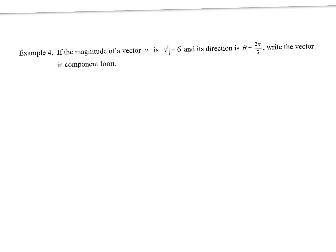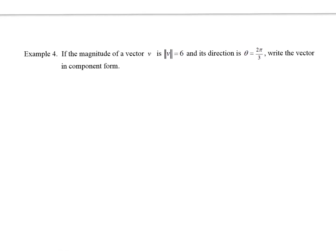Example four: if the magnitude of a vector is 6 and its direction is 2π/3, write the vector in component form. Whenever in doubt, draw. So where is 2π/3? Second quadrant — it's the same as 120 degrees from the initial side. Here's our angle, and we know the length is 6. If I draw a right triangle, I'm trying to find the x and y coordinates of the endpoint.